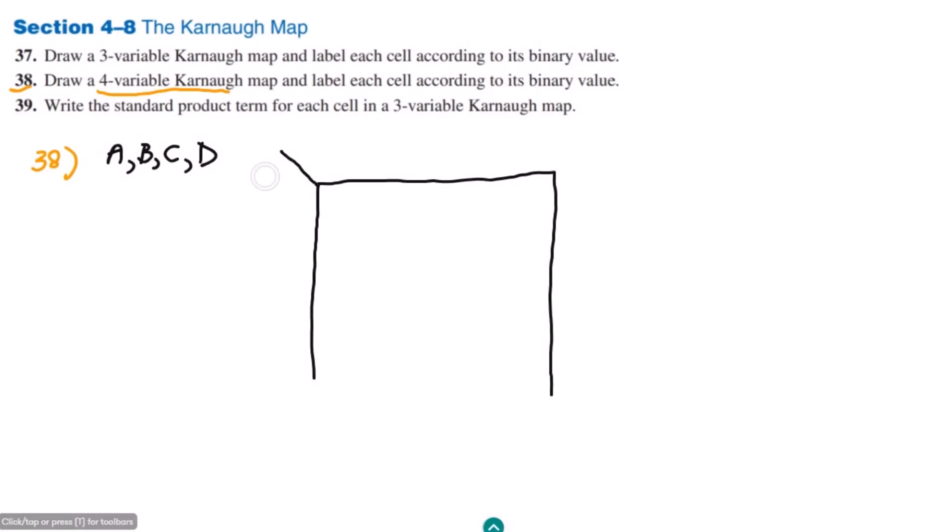Let me write here the first two variables which are A and B, as these are four variables. Let me split them in the group of two-two, so A, B and C, D. These are the variables here, and let me draw them here as well.